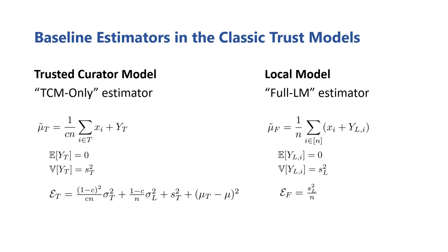To make these more intuitive, we can decompose the TCM-only estimator's error into three primary components: the excess sampling error, the privacy error, and the bias error. The excess sampling error stems from the fact that in this estimator, we're only using the data of the TCM users and discarding all the data of the LM users. The privacy error component is straightforward — it's the error required to ensure differential privacy.